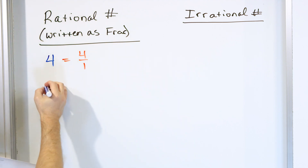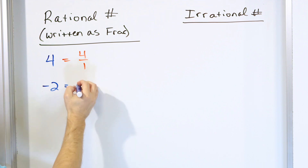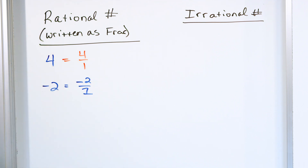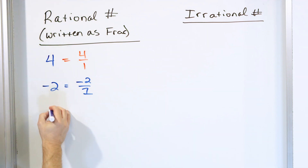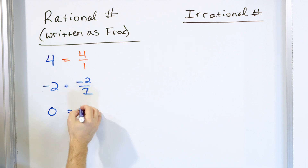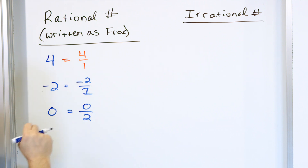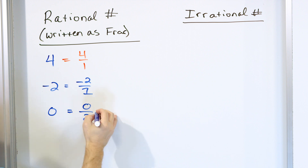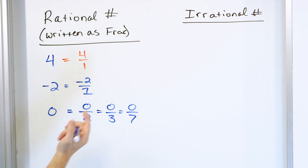What about some of these other numbers, like negative numbers? What about negative two? Is this rational? All you have to do is say, can it be written as a fraction? You can write it as negative two over one. So all the negative numbers, all the positive numbers are all rational numbers. What about the number zero? Is zero rational or irrational? Well, zero can be written as lots of different things — zero over two, zero over three, zero over seven, zero over anything — these are all fractions. So zero is a rational number.